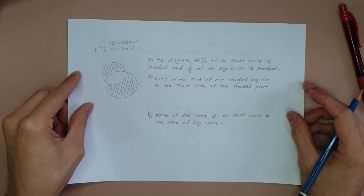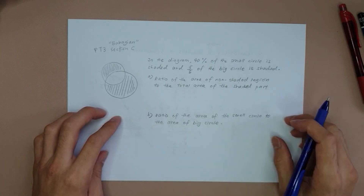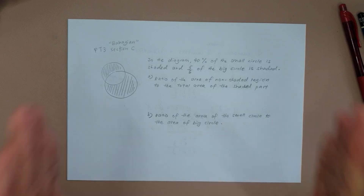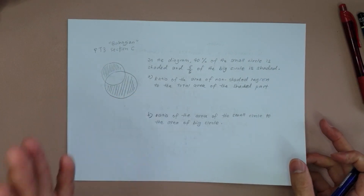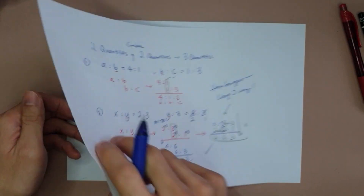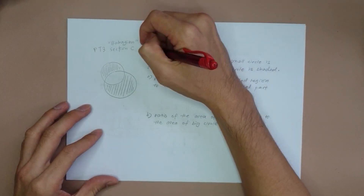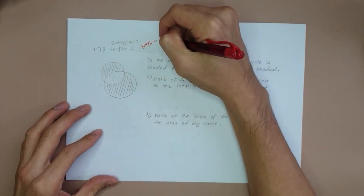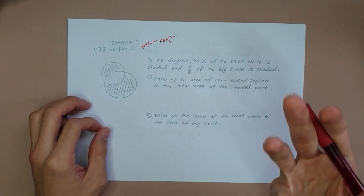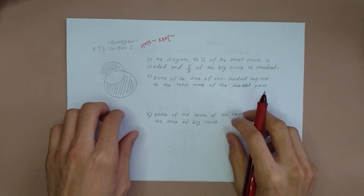Now for our HOTS question — this one came out in a famous school exam. It's the kind of question where students tend to overthink. This is the so-called HOTS question in PT3 Section C. You need this three-quantity ratio idea to solve it. Once you have a fixed method, it's actually not that difficult — let's do it.